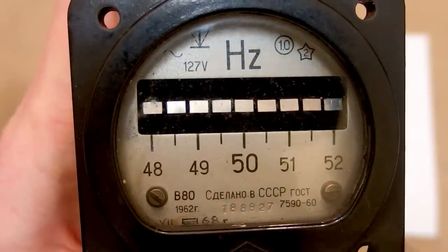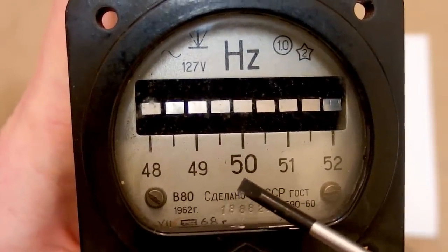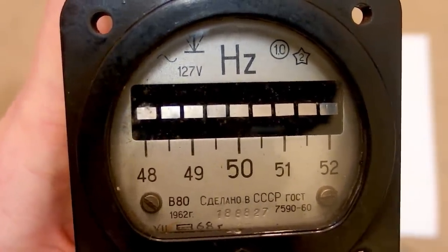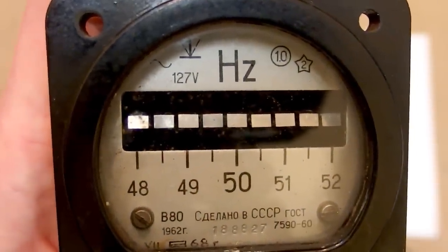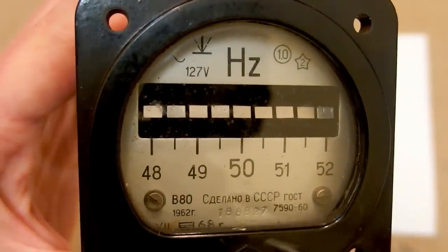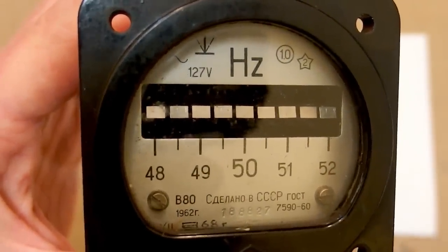And it was apparently designed to measure the mains frequency but nowadays the frequency of mains is controlled with quite a high accuracy like 0.01 hertz so this device would be absolutely useless to measure the deviation of the mains frequency nowadays.